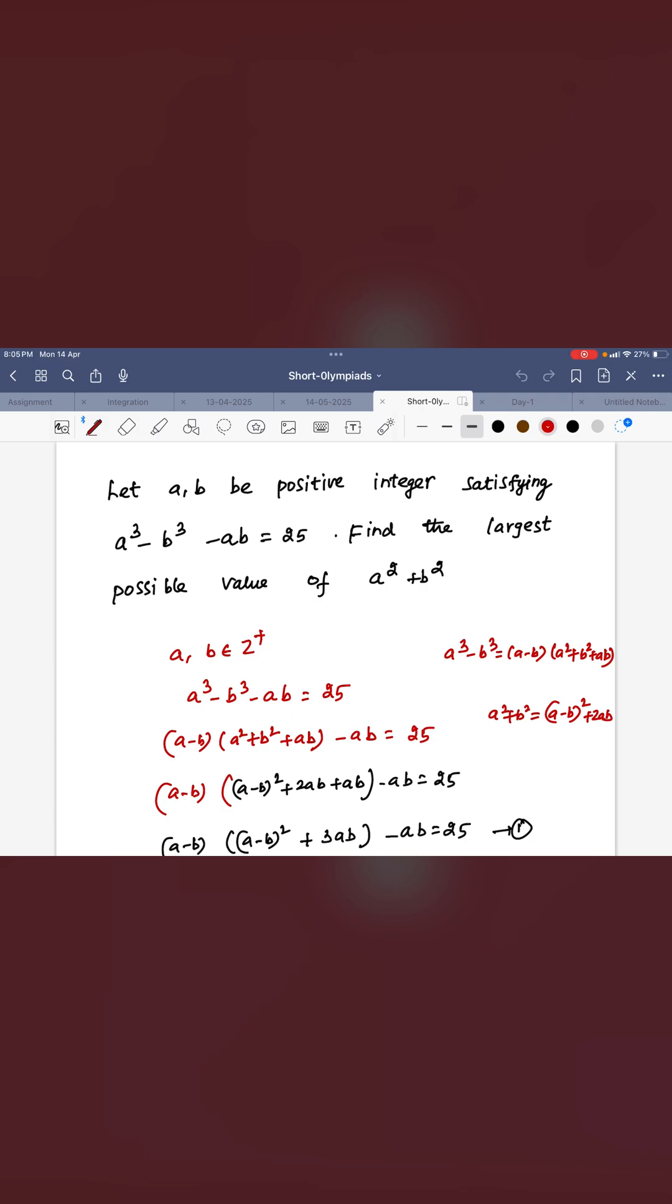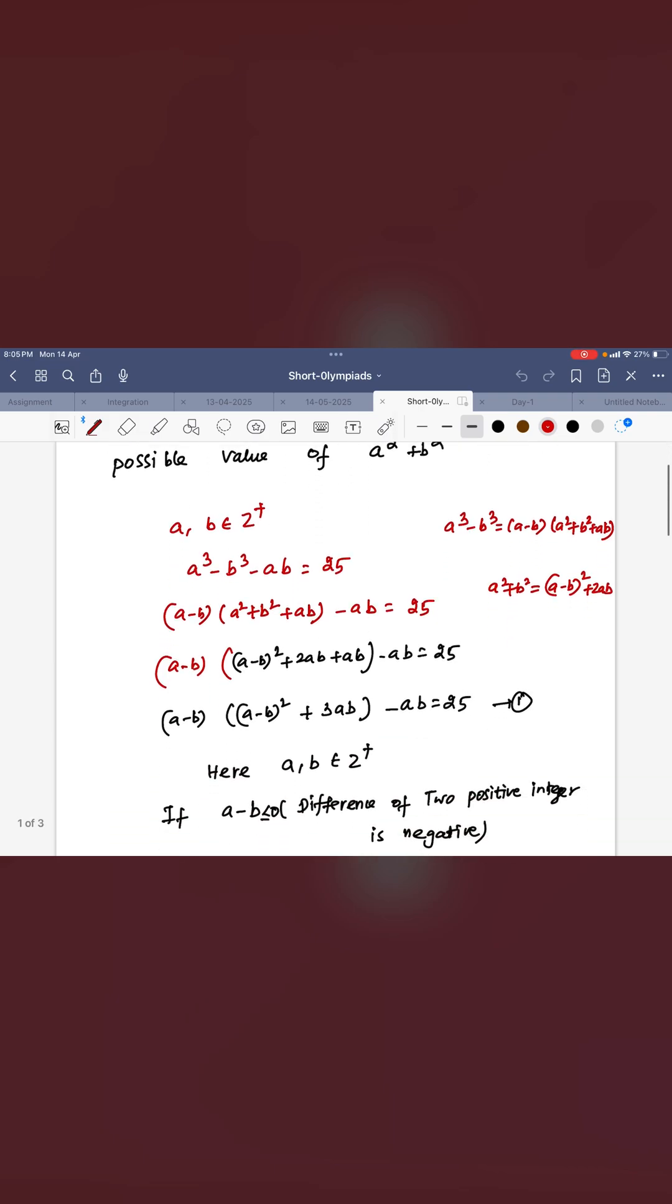Here A, B are positive integers. You can see A³ - B³, you know the formula: (A - B) × (A² + B² + AB).